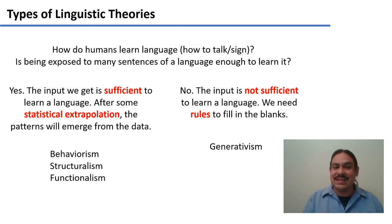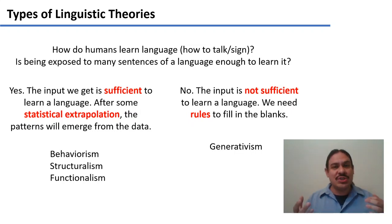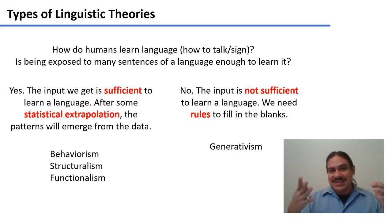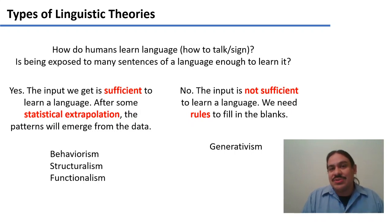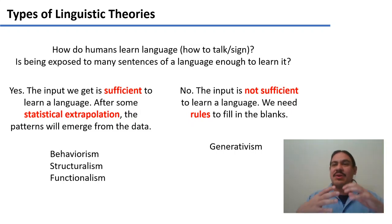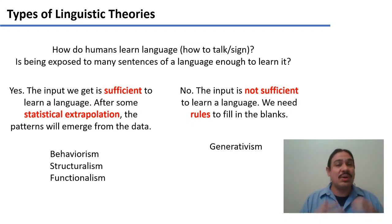Some currents of thought say yes — that the input, the sentences that you hear, are very rich. Rich enough that you can get cognitive extrapolation, essentially statistical extrapolation of patterns, and that in time these patterns will emerge as a human language. From the past to the present, these theories have been called behaviorism, structuralism, and functionalism, but in essence they say that the input is all you need — that your brain will pull together the cognitive resources to compute and acquire language.